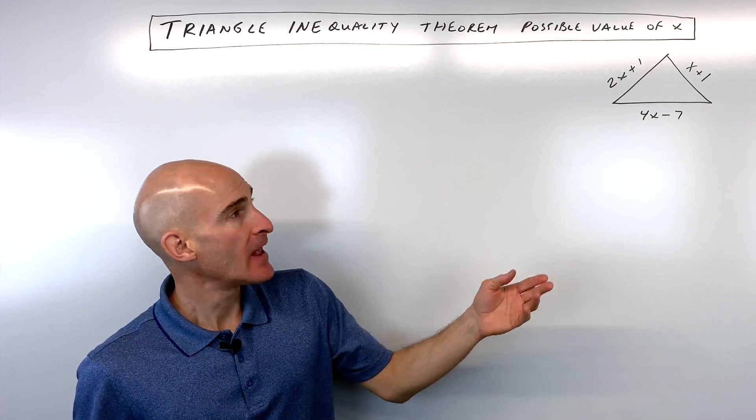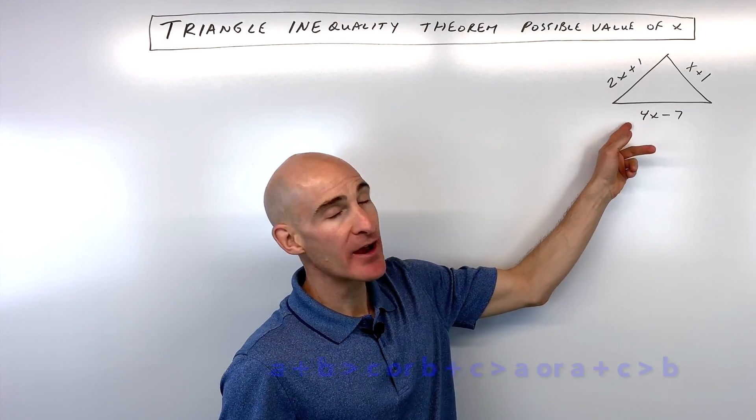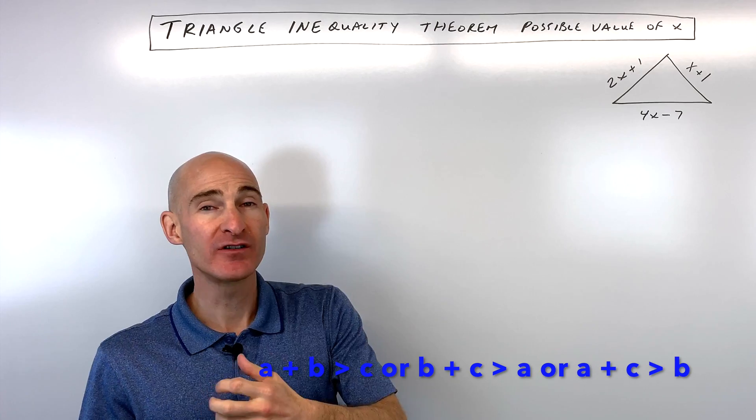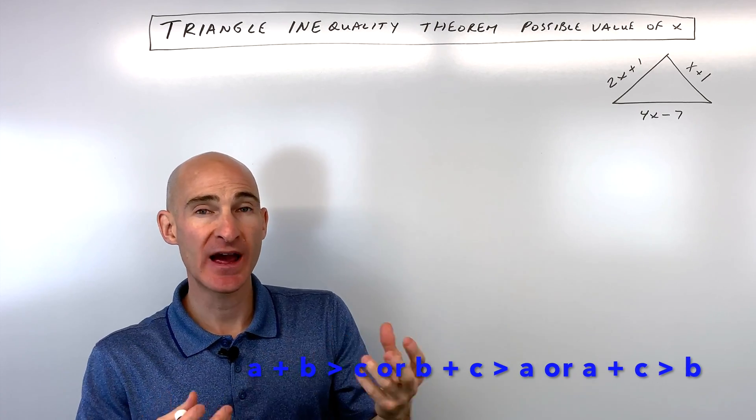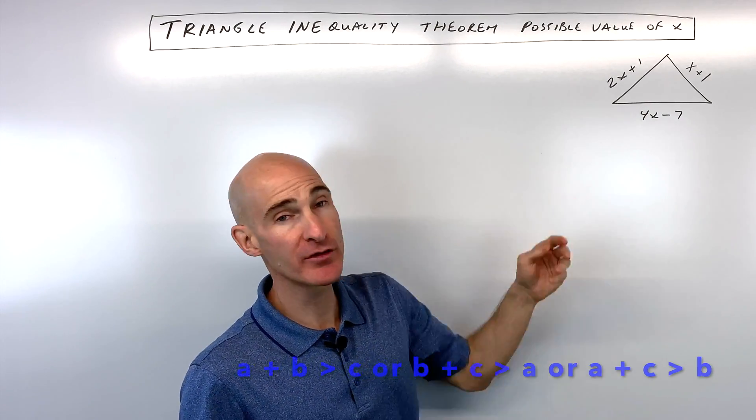The Triangle Inequality Theorem tells us that any two sides in a triangle have to be greater than the third side. So when you add any two sides together, they have to be more than the third.